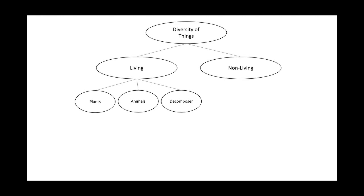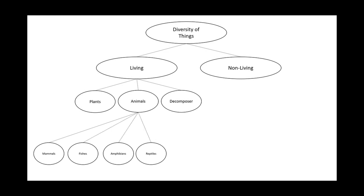The six animal groups are mammals, fish, amphibians, reptiles, birds, and insects. One way they'll test you is they'll show you a certain animal and you must identify the group. For example, if an animal has three body parts, you must know it's an insect. Or they'll show you a dog and ask if it's a mammal — you say yes, because it has hair or fur and feeds its young with milk.